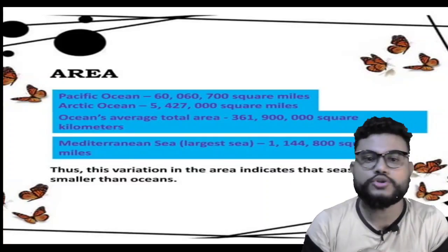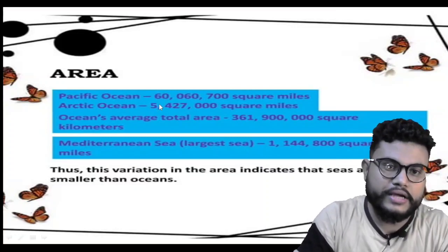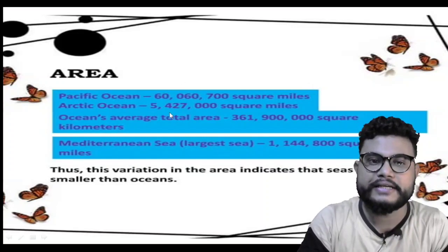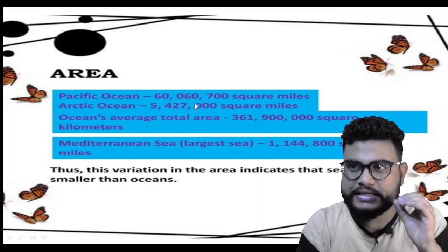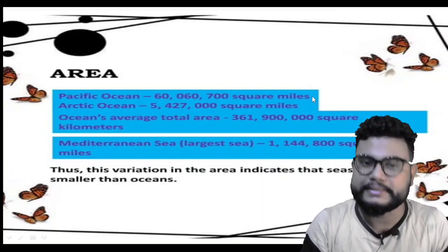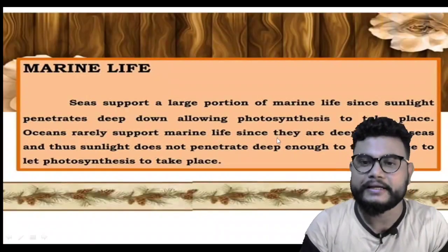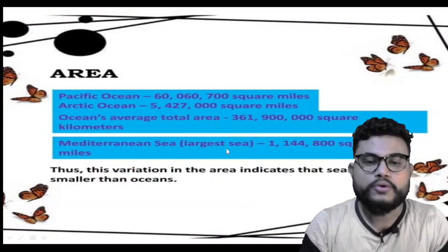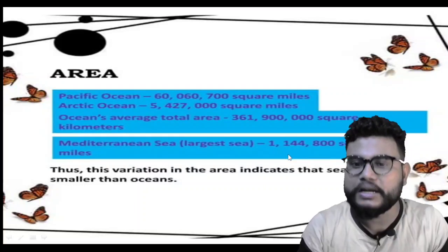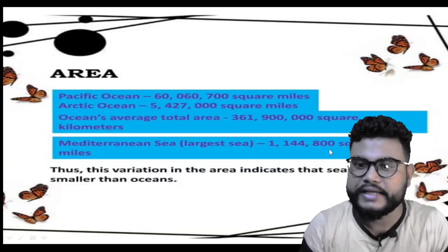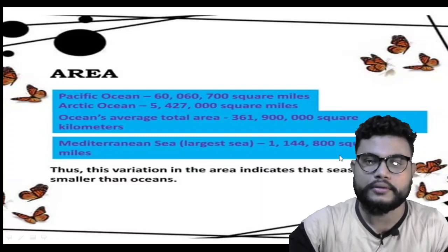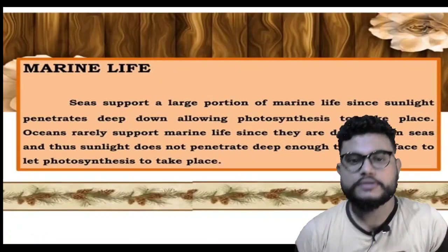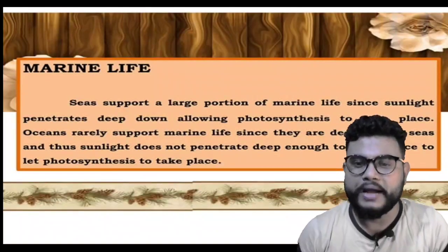Area-wise also, oceans cover large areas while seas cover smaller areas. The largest ocean has an area of 60,700 square miles, whereas the Mediterranean Sea has an area of 1,144,800 square miles.